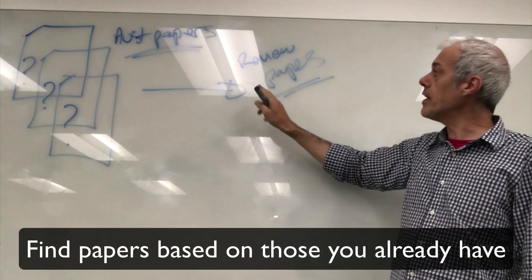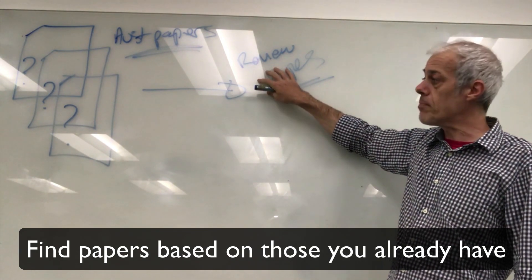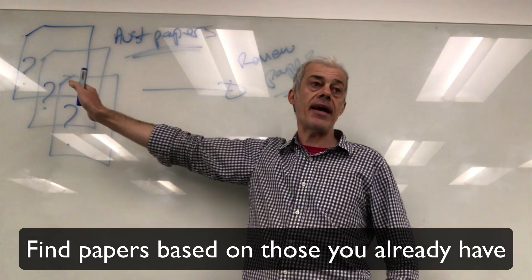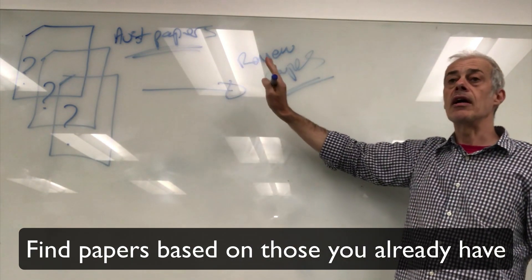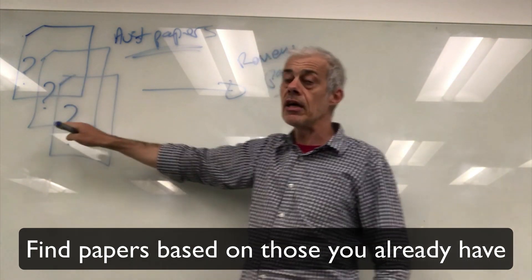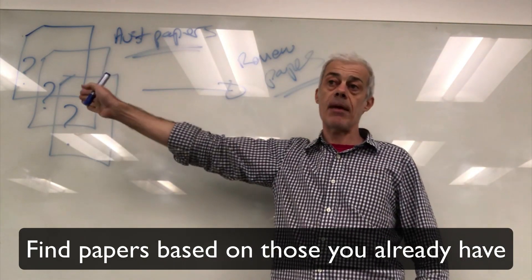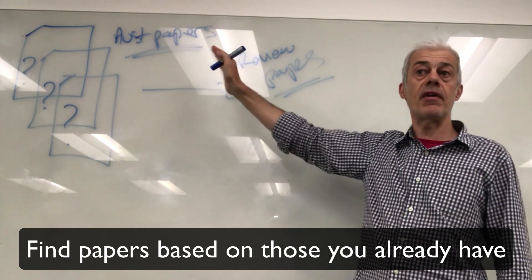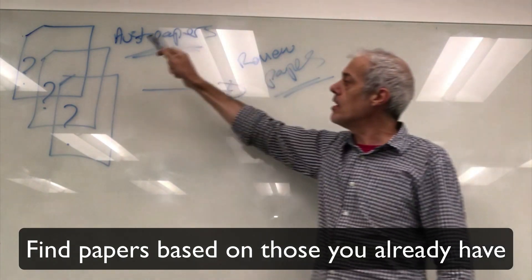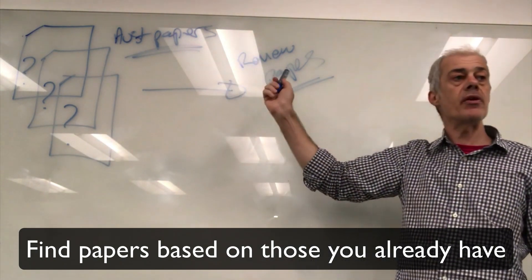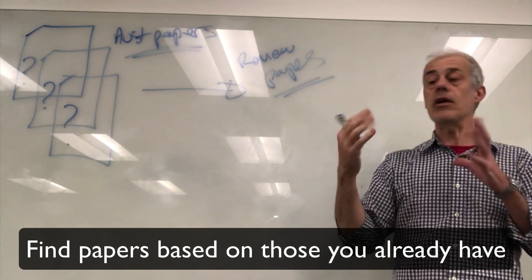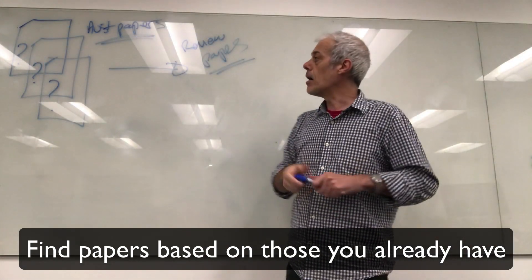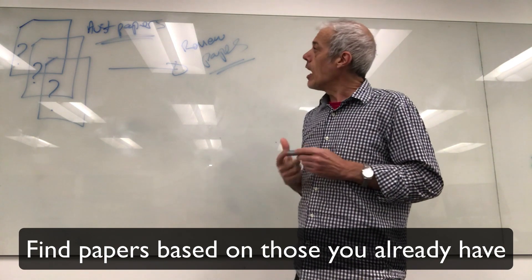Hopefully when you searched for these review papers and included some keywords from your research papers, the review is highly aligned to the research. If you just searched randomly on a topic without taking into account the detail, the review paper might not relate very well. Depending on the quality of your review paper, you may want to repeat that search to find better ones, or confirm you're happy with both your research and review articles.